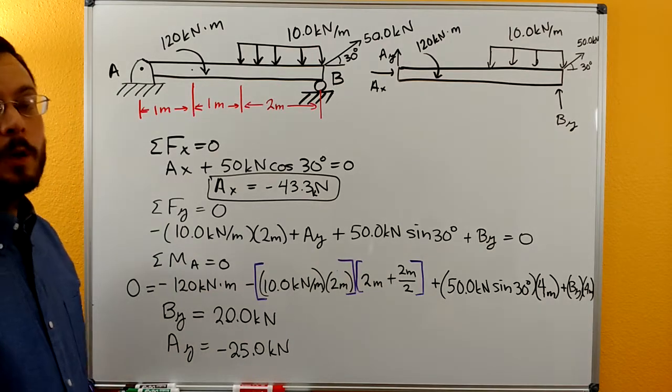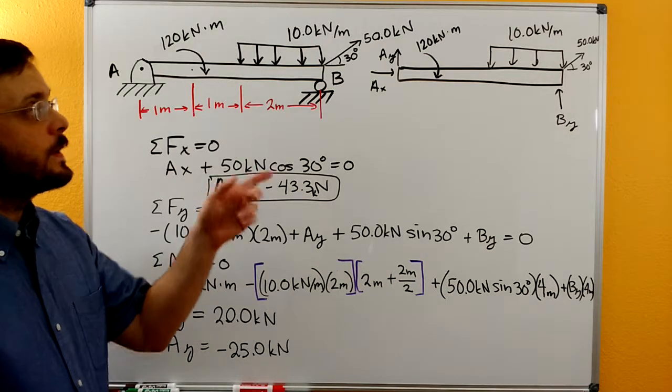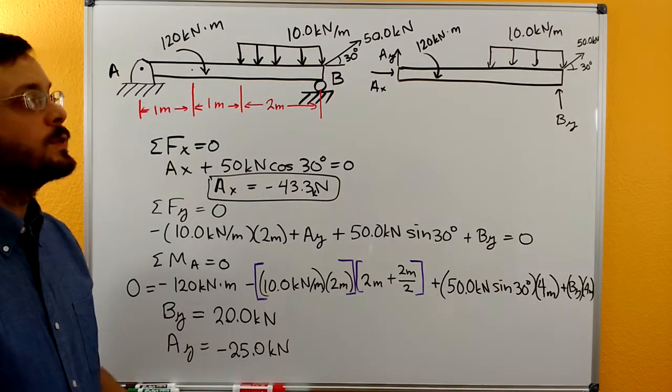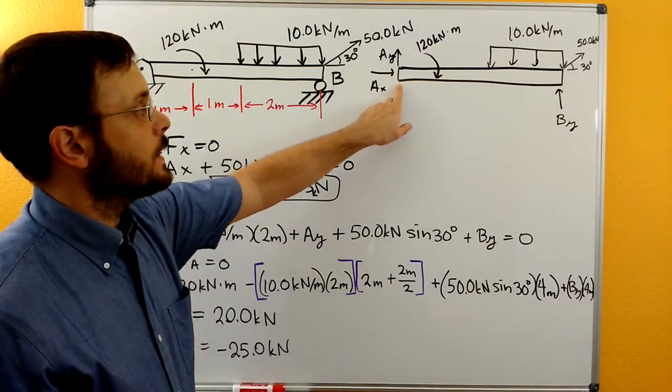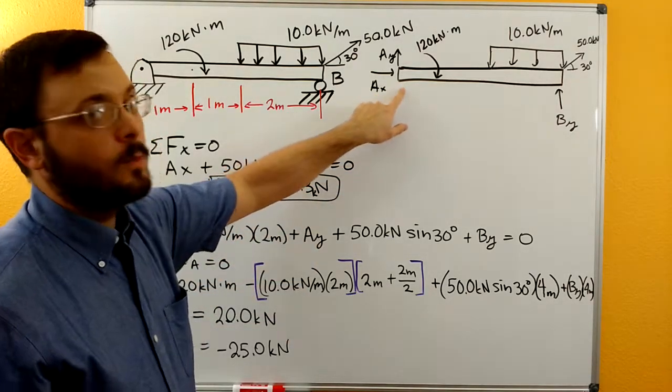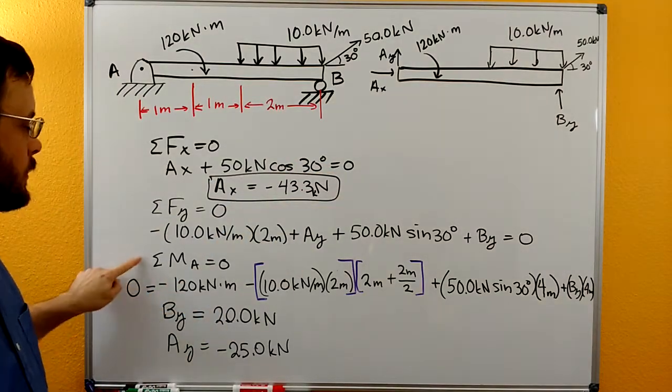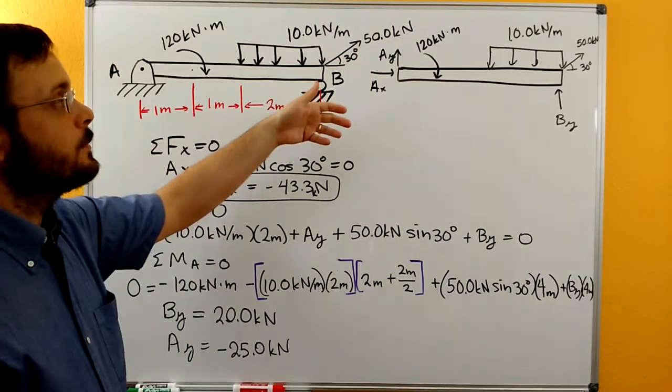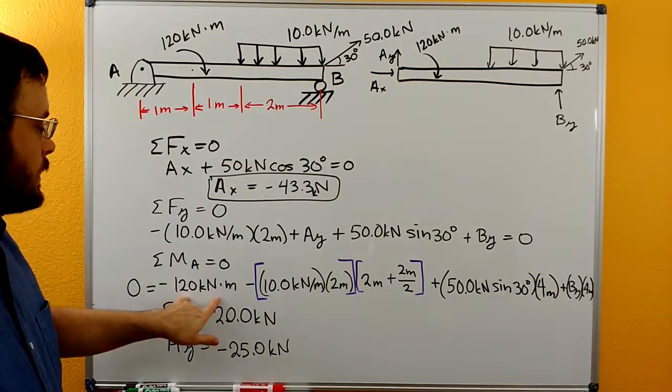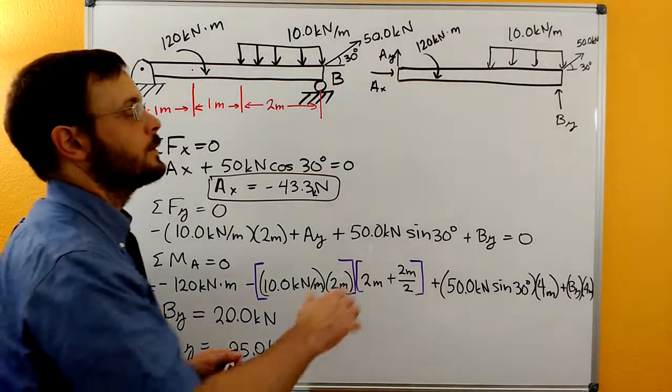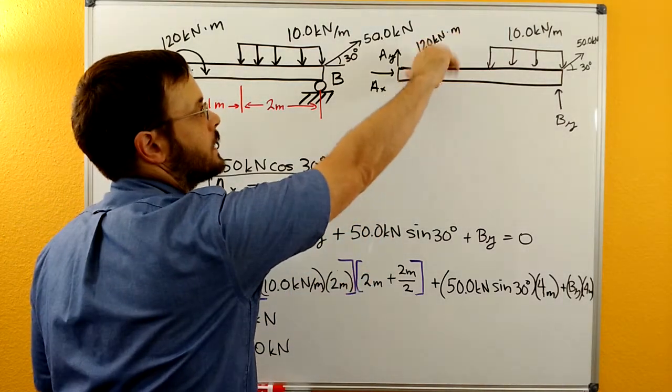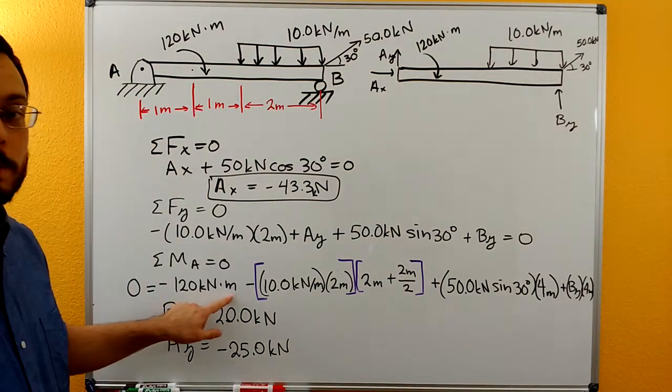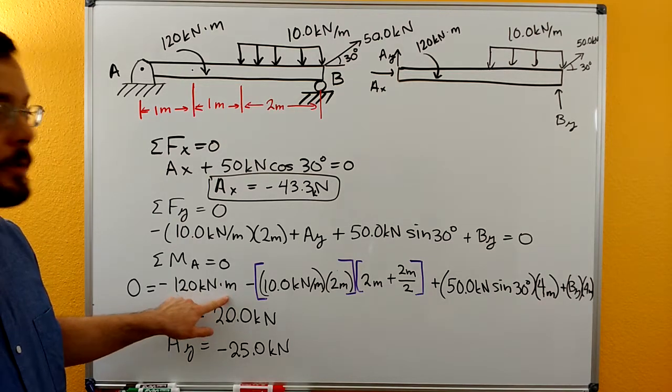So we'll do a sum of the moments. When we do sum of the moments, we want to try to pick a location that has two unknowns through it or maybe two variables through it. So in this case, we can pick A and we can eliminate AX and AY out of our sum of the moments equations. So here we have sum of the moments at A. AX and AY go through A. They can't create a moment about A. Then we have the negative 120 kilonewton meter moment. It's negative because it's clockwise. It's already in moment units, kilonewtons times meters. It doesn't need to be multiplied by anything.